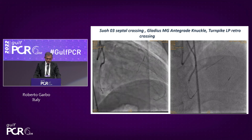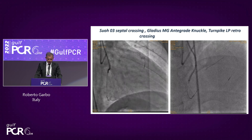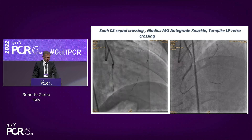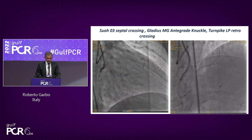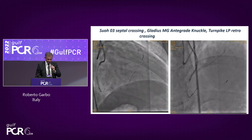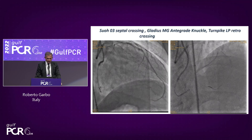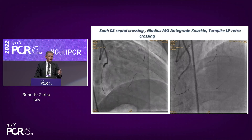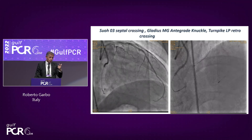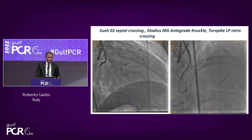I started retrograde with a very low amount of contrast — just 2 cc to understand position. The wire used was a Sion Blue (SWO 3), crossing with a Turnpike LP retrograde: Turnpike LP 150 and SWO 3. From antegrade, I started directly with the Gladius Mongo to knuckle, because we need to make the connection in the distal part of the right. We cannot do everything retrograde. I placed the antegrade wire in front of the distal crux to help the retrograde wire puncture.